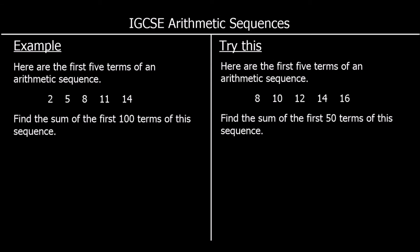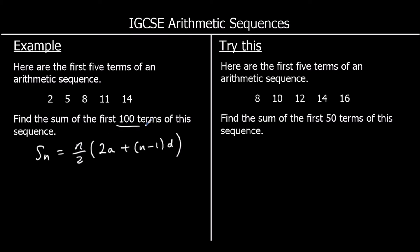Here's another example. We've been given the first five terms of a sequence: 2, 5, 8, 11, and 14, and we want the sum of the first 100 terms. We're going to use the sum formula: Sₙ = n/2 × (2a + (n−1)d). We can identify n = 100, a = 2 (the first term), and d = 3 (the common difference, going up in 3s).